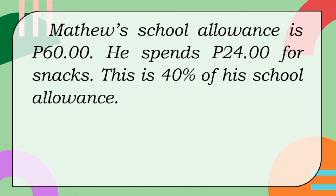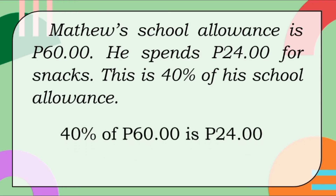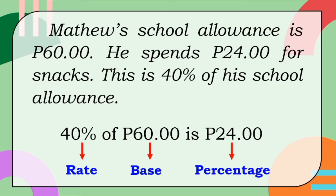Sa problem na ito, gawin natin mas maikli ang statement pero pareho pa rin ang content. So we have: 40% of 60 pesos is 24 pesos. 40% is the rate because of the percent sign. 60 pesos is the base — ang palatandaan dito ay ang word na 'of', nauuna ang 'of' bago yung base. 24 pesos is the percentage — ang palatandaan naman dito ay ang word na 'is'. Pero pwede rin ang 'is' ay makikita before the percentage or after the percentage.